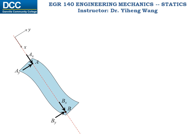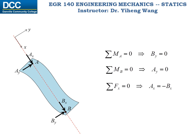Now let's try to write the equilibrium equations. First, the resultant moment about point A equals zero. Since force By is the only force that could possibly create moment about point A — because the other three forces all have lines of action passing through point A — therefore force By must be zero. Similarly, by summing moments about point B, we can conclude that force Ay must also be zero. And lastly, by summing forces along the x-axis, we can tell Ax plus Bx equals zero, therefore Ax equals negative Bx.